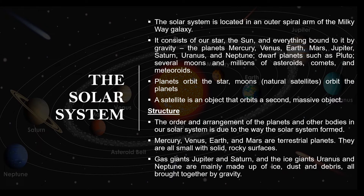Our solar system is located in an outer spiral arm of the Milky Way galaxy. Our solar system consists of the Sun — our star — and everything else bound to it by gravity: the planets Mercury, Venus, Earth, Mars, Jupiter, Saturn, Uranus, and Neptune; dwarf planets like Pluto; several moons; asteroids; comets; and meteoroids. The planets orbit the star and moons, which are natural satellites, orbit the planets.